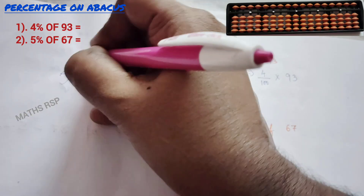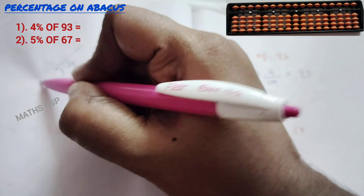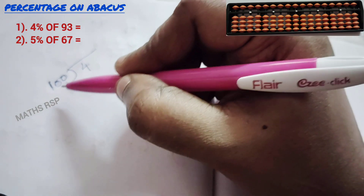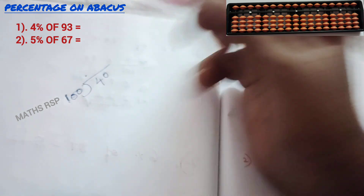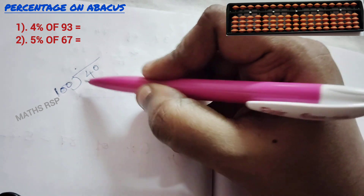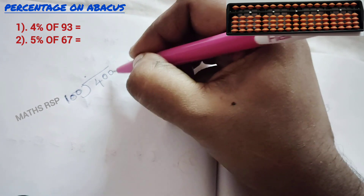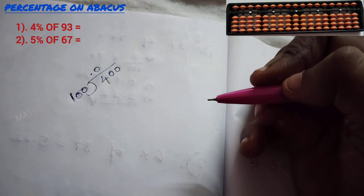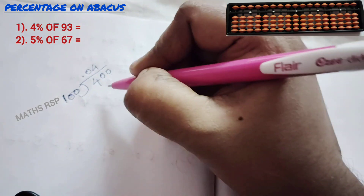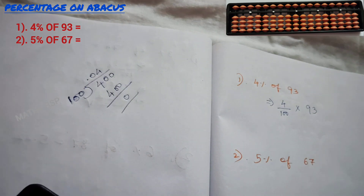We need to solve 4 divided by 100. The dividend is 4, so put 4 here and divisor is 100. Since dividend is lesser than divisor, we add 0 and include a dot in the quotient part. Still lesser, so add another 0 and another 0 in quotient. Now 4 times 100 is 400, and 400 minus 400 equals 0. The quotient is 0.04.